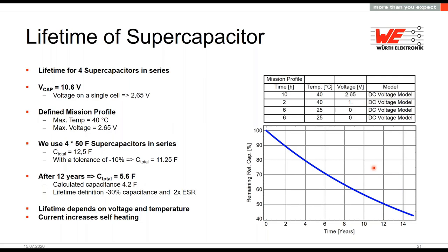To show what lifetime means in practice, we created a use case: 10 hours at 40°C and 2.65V, 2 hours at 40°C and 1V, and the remaining 12 hours with no operation. The bank voltage is 10.6V — single cell voltage 2.65V. Maximum temperature is 40°C. We previously calculated the needed capacitance as 4.2 farad. The total capacitance in the bank is 12.5 farad, and even taking a -10% tolerance into account it drops to 11.25 farad — still a large safety margin. After 12 years we still have around 5.6 farad.